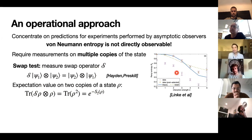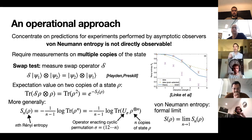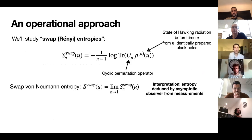This generalizes: instead of taking two copies of a system, we can take n copies and measure an operator that cyclically permutes them — it takes states psi_1, psi_2, ..., psi_n and produces psi_2, psi_3, ..., psi_n, psi_1. If you have n copies of a state rho and measure this operator, the expectation value is related to a Rényi entropy. In particular, the von Neumann entropy can be recovered from this as a formal limit as n goes to one, which will be useful later on.